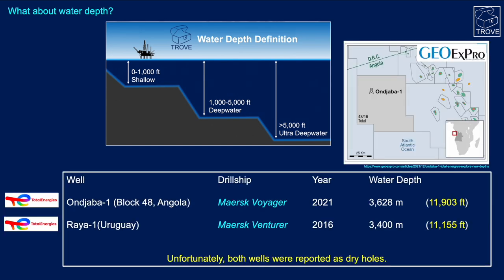Here are a couple of examples. The Jabba One well was drilled in Block 48 in Angola by the Maersk Voyager in 2021 in a water depth of some 11,900 feet. It took the record from the Rea One well — a Total Energies-operated well drilled offshore Uruguay by the Maersk Venturer in 2016 — at 11,150 feet of water. Unfortunately, both of these wells were reported as dry holes, but exploration is certainly moving into deeper water with a lot of success internationally.